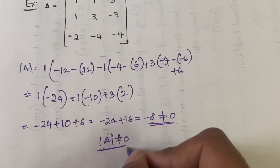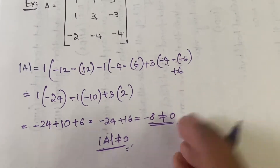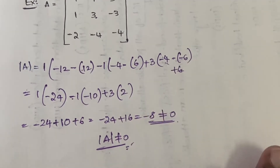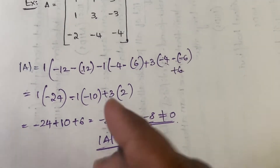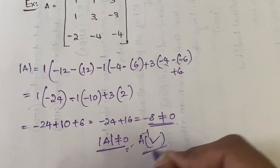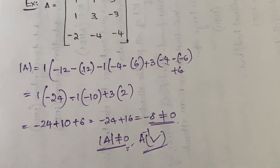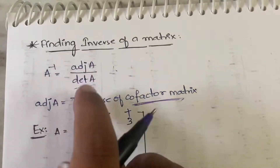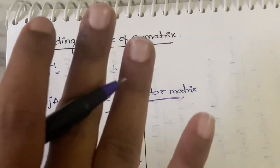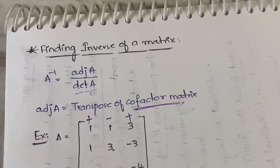Since det(A) is not equal to 0, it is a non-singular matrix. If it were equal to 0, it would be a singular matrix. Since it is not equal to 0, A inverse will exist. So you can now calculate the A inverse using adjoint A divided by det(A). First we need to calculate the adjoint, which requires the cofactor matrix.